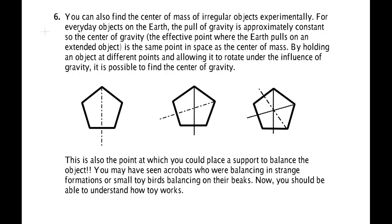One practical way people find the center of mass is by using gravity. If you hold an object at one point and the center of mass does not lie along the vertical line through that point, gravity creates a torque and the object rotates until the center of mass lies somewhere along the line going straight down. Mark that line, repeat from several other hanging points, and the lines all intersect at one place — that's the center of mass.